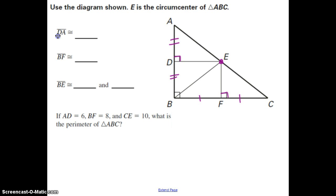So when we're trying to label here, segment DA is congruent to segment DB. Segment BF over here is congruent to segment FC. And then the special property that the circumcenter is equidistant from the vertices: we have segment BE, which is the distance from the circumcenter to vertex B, needs to be congruent to EA and EC.